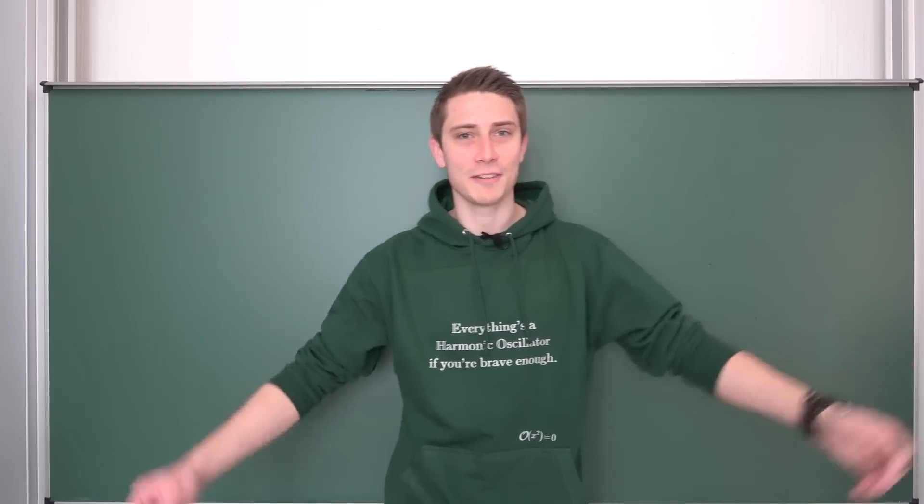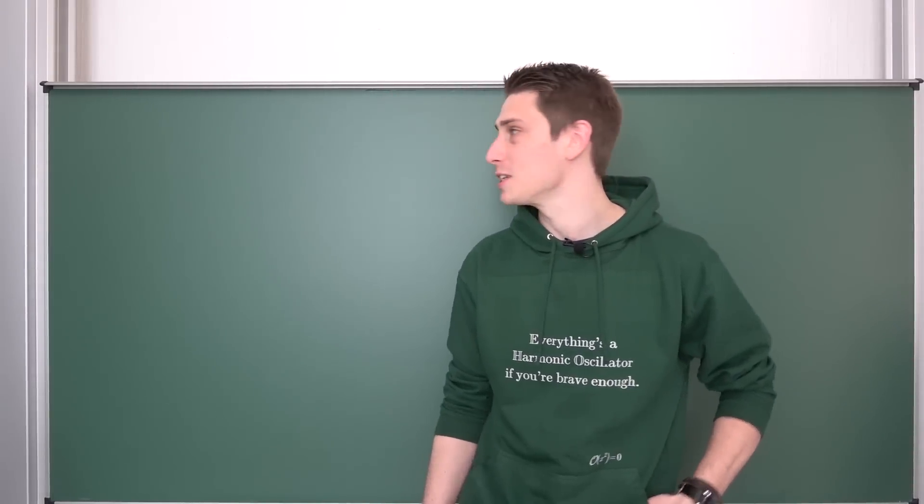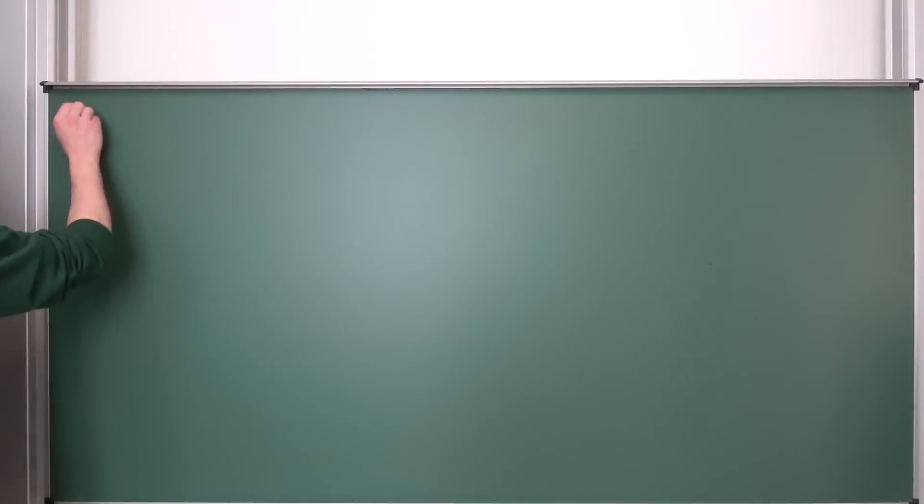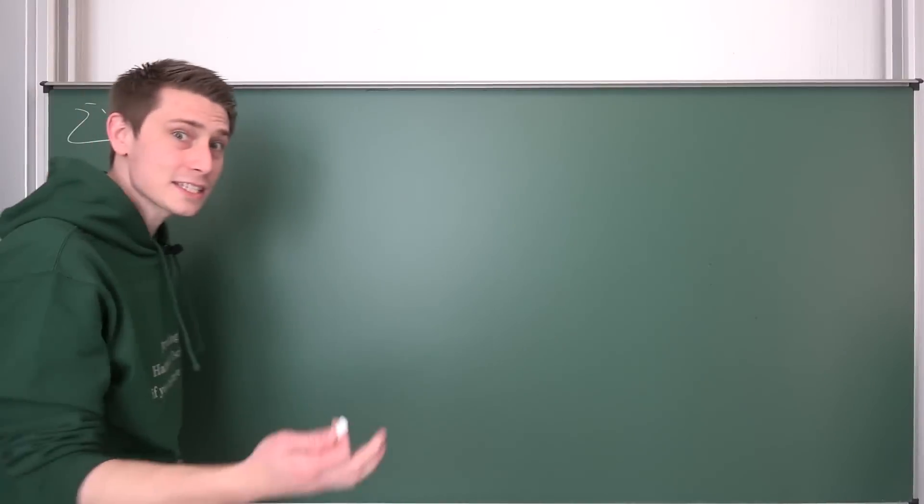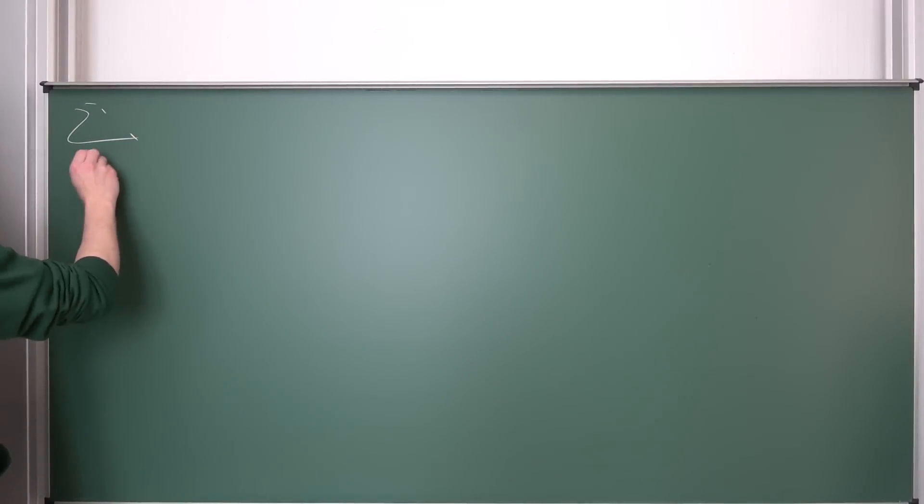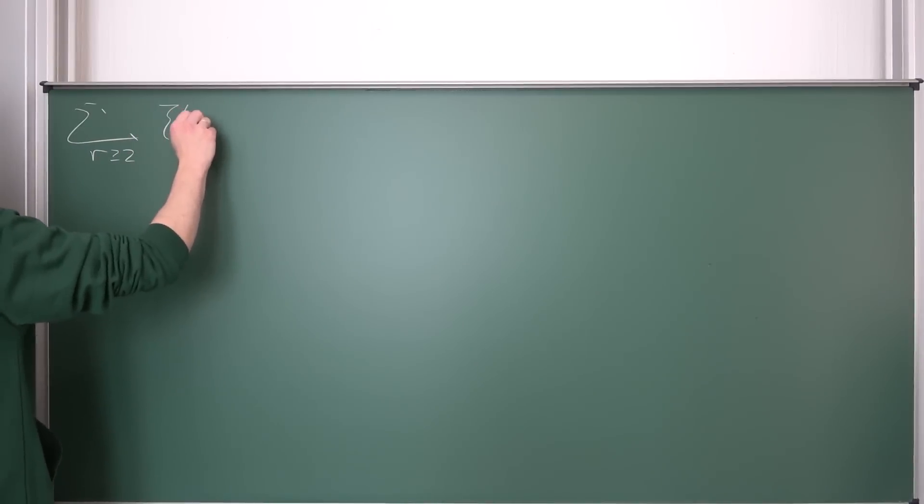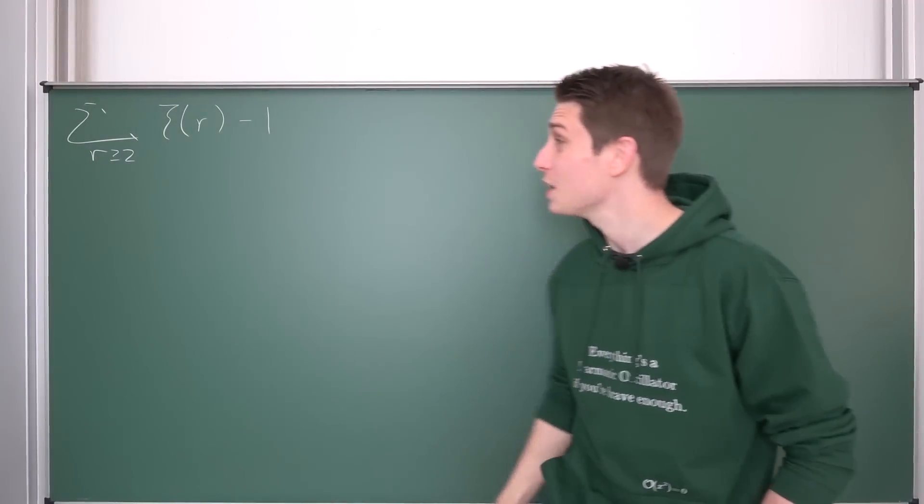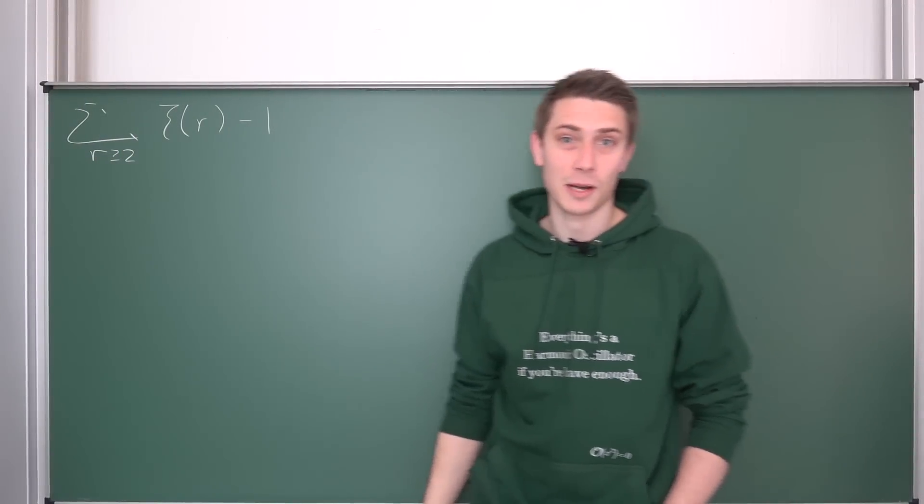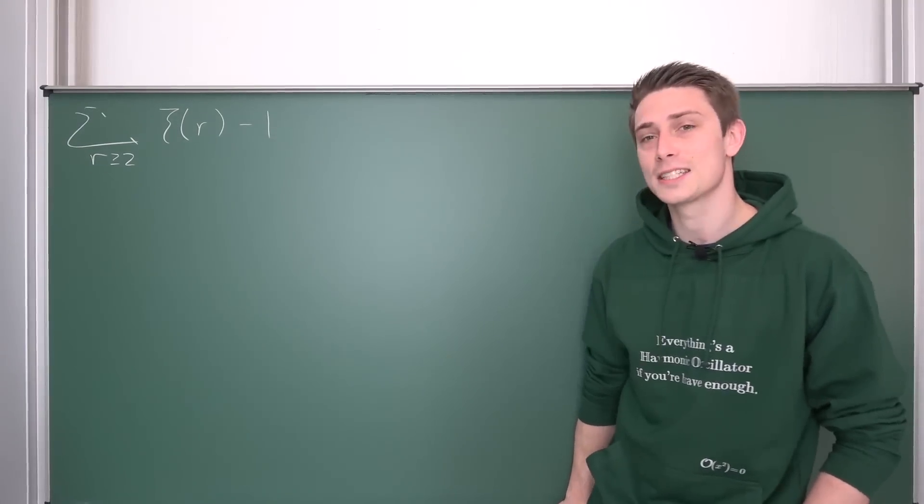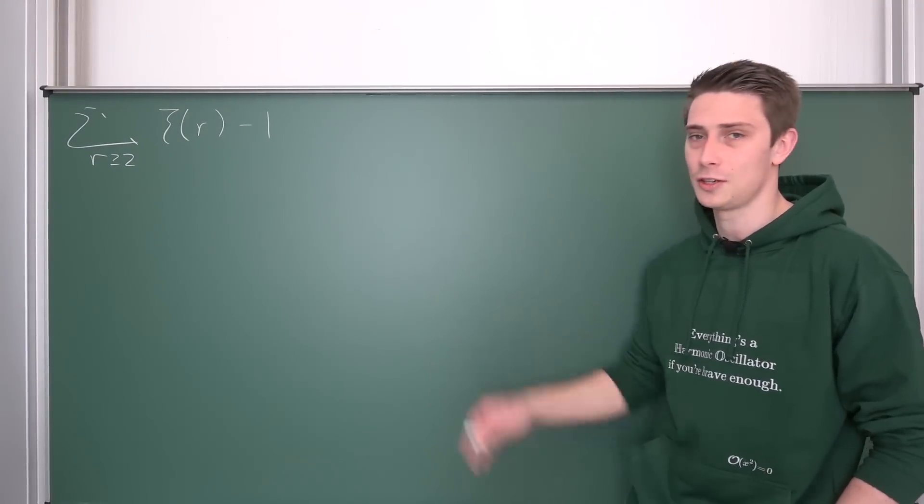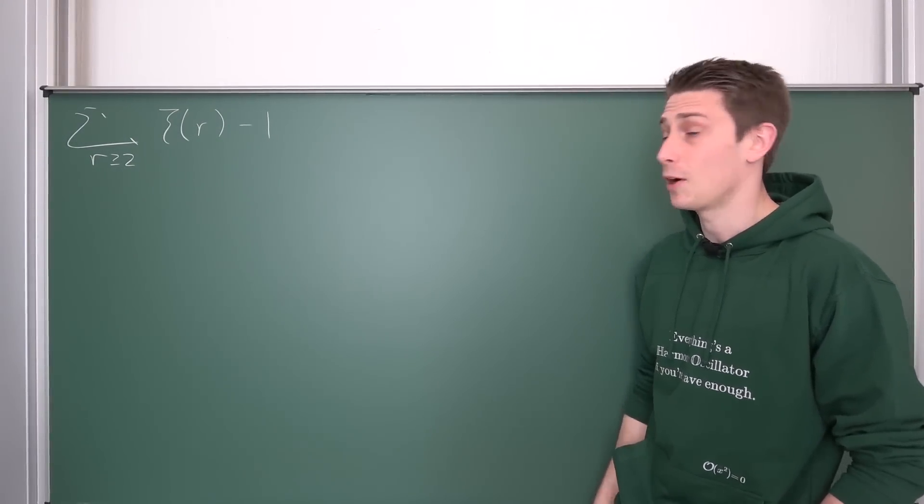Analytic number theory, a fun series we are going to talk about today. What is the series exactly? Well, it's an infinity boy. It's the series from r being greater or equal to 2 of Riemann's zeta of r minus 1. And we want to find out the value of this thing. We are going to dive right into this. It's actually not too hard to be honest, but it's a fun one and I might as well cover it on this channel.